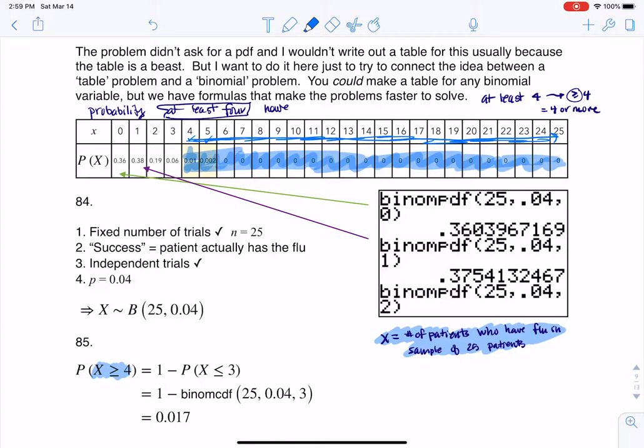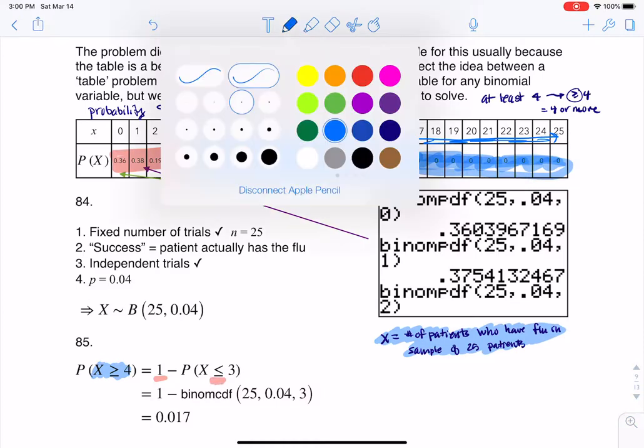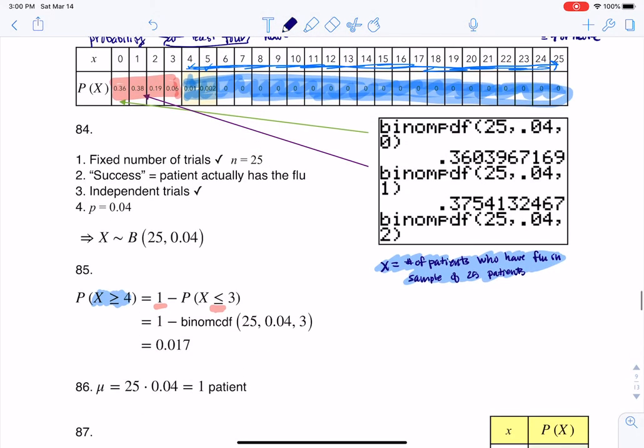And the thing is we just don't have a greater than or equal to button on our calculator. So if I want all of the numbers from 4 on up here, what I do not want, what I want to get rid of, is 3 on down. These are the ones I do not want. So that's why you see me saying I have the complement rule with 1 because that's always the probability of our entire sample space. I want the complement to 3 on down. And the reason we go there is because we do have a button for less than or equal to. We have a CDF, and so that's why you see me putting binomcdf here, 25, 0.04, and 3, and there's my answer.